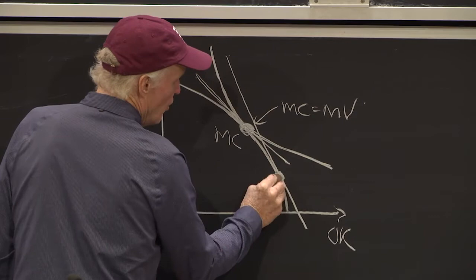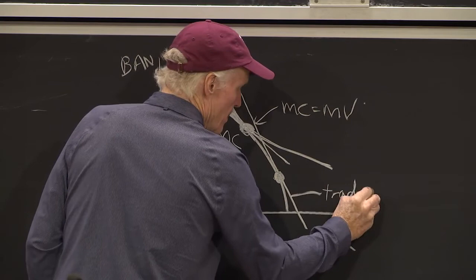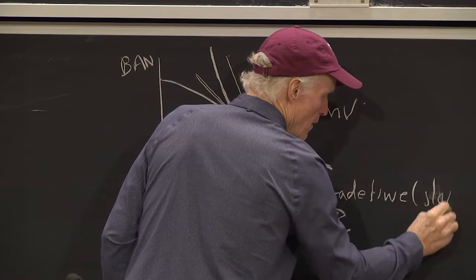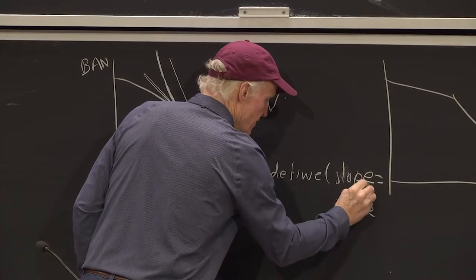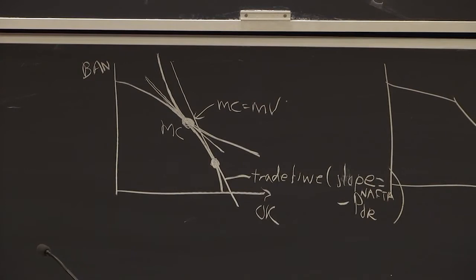In fact, he'd want to go to the point where the slope of this trade line, this is the trade line, slope equals minus price of oranges in NAFTA. That's what it is, that's the price of oranges.